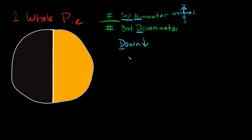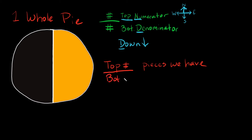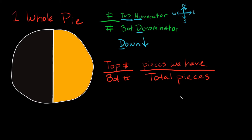So what do these two numbers represent? The top number — the numerator — represents how many pieces we have. The bottom number — the denominator — represents how many total pieces we have.